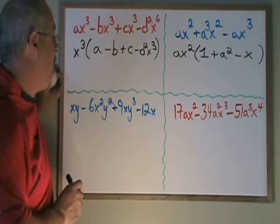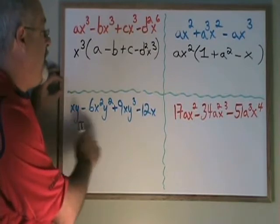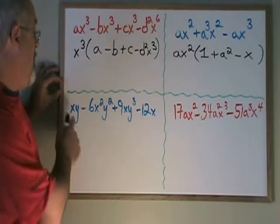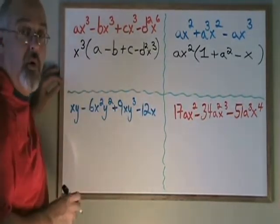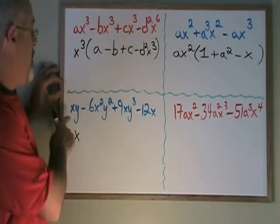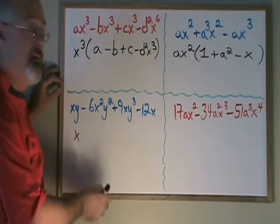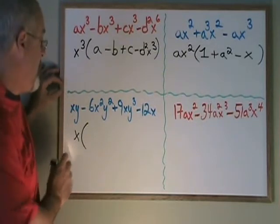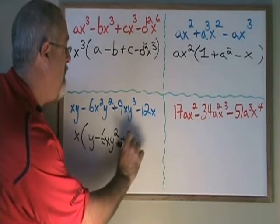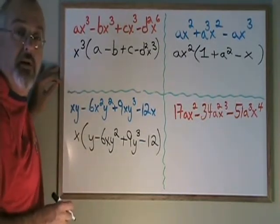Here we have xy minus 6x squared y squared plus 9xy cubed minus 12x. We can't factor out a number because the first term doesn't have a numerical coefficient other than 1. All four terms have an x, but not all four terms have a y, so we cannot take out a y either. Our greatest common factor is going to be a term of x. When we look at our x's, we have x, x squared, x, and x — the smallest of those is x, so the greatest common factor will be x. Dividing the original expression by x, I get y minus 6xy squared plus 9y cubed minus 12. And if I multiply this factor by x, I will get my original expression and it verifies.